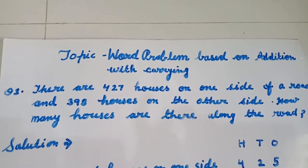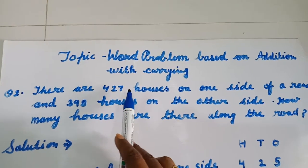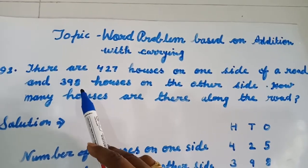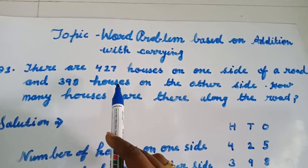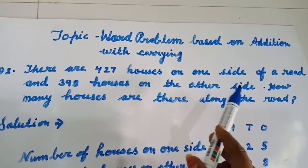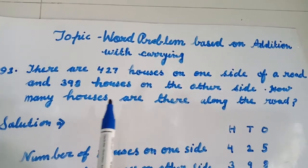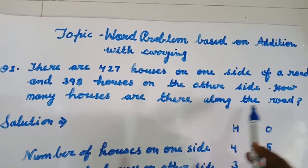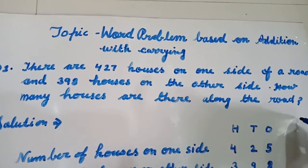There are 427 houses on one side of a road and 398 houses on other side. How many houses are there along the road? Along the road means road के साथ में.